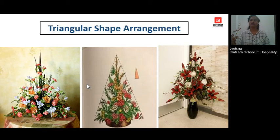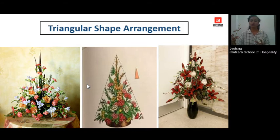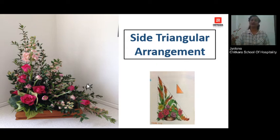Let's move on to various designs and shapes. The first is the triangular shape — all flower arrangements that have a triangular shape will be called triangular or triangle shape. These can be kept at the counter so only the front is visible; the back side is not visible. Next is the side triangular arrangement — this can be a right-side triangular or a left-side triangular, as you can see in the image.